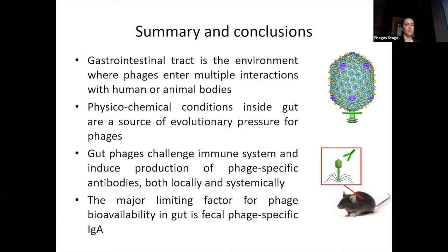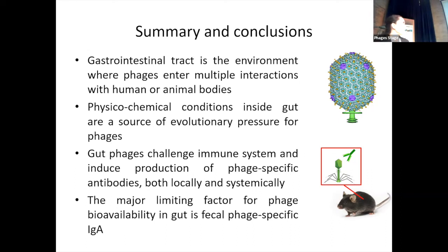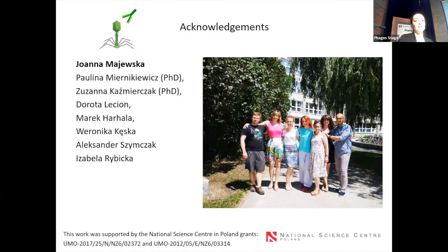To sum up: the gastrointestinal tract is the environment where phages enter multiple interactions with human or animal bodies, and physicochemical conditions inside the gut are a source of evolutionary pressure for phages. Gut phages challenge the immune system and induce production of phage-specific antibodies both locally and systemically. The major limiting factor for phage bioavailability in the gut is phage-specific IgA. And our acknowledgements. Thank you.